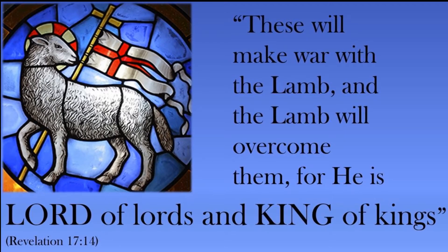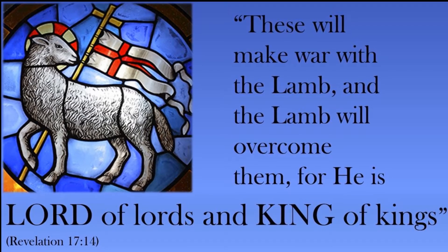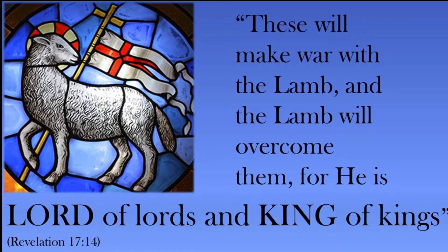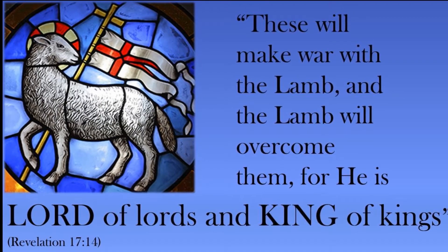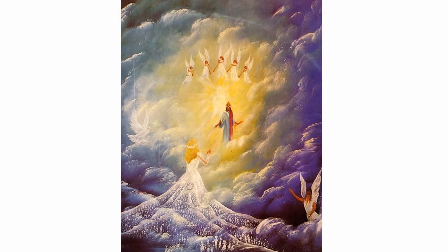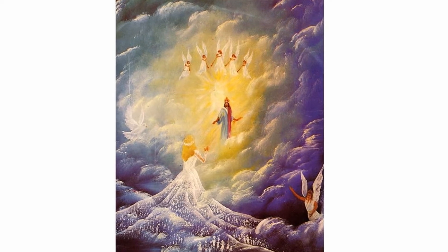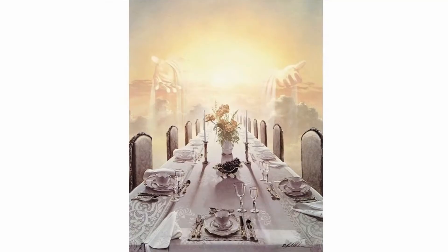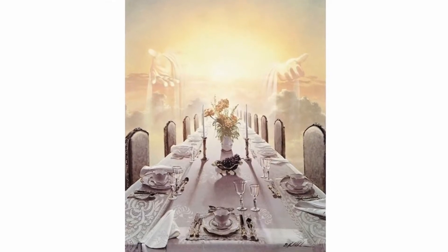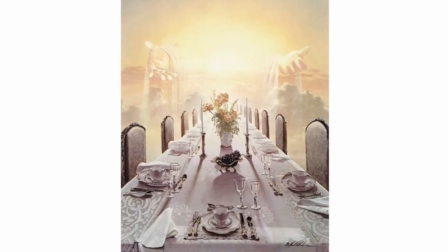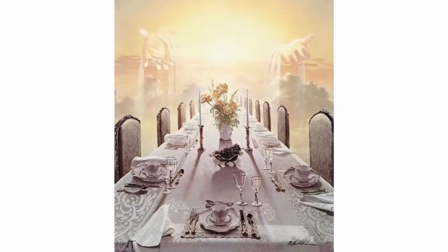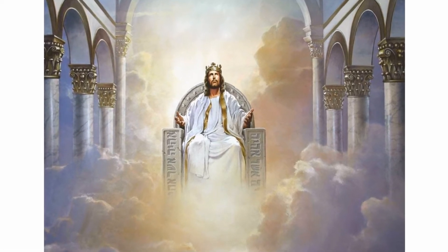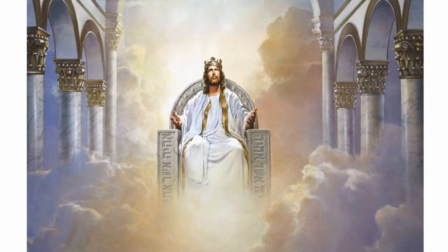In chapter 17 the final antichrist and his minions make war against the lamb, but the lamb overcomes them because he is Lord of lords and King of kings. In chapter 19 all heaven rejoices because of the marriage of the lamb, and his faithful followers on earth are also filled with joy that they will attend the marriage supper of the lamb. Finally, in chapters 21 and 22, verse after verse proclaims that Jesus the lamb is and will be at the very center of the eternal kingdom of God.